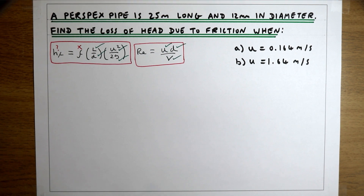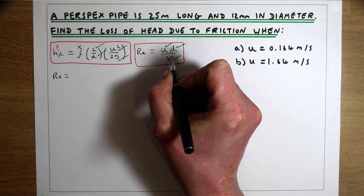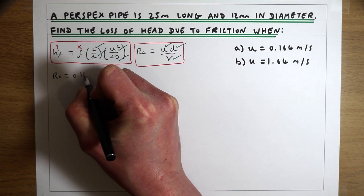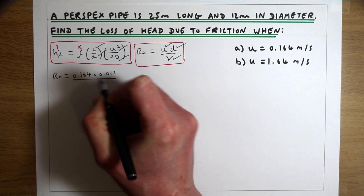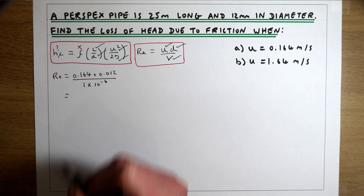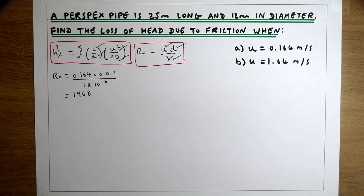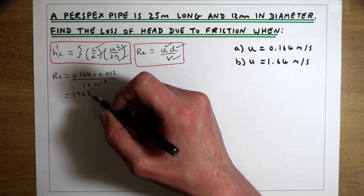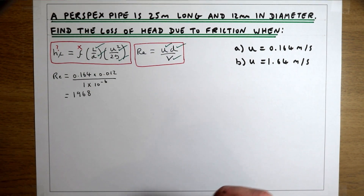For the first part of the example, Reynolds number equals UD over V: 0.164 times 0.012 divided by the kinematic viscosity of 1×10⁻⁶ m²/s for water, which gives us a Reynolds number of 1,968. Since this is below 2,000, we expect this flow to be laminar. We can now plot that onto the Moody diagram to find friction factor F and then calculate HF.